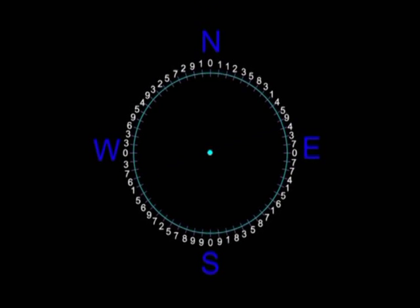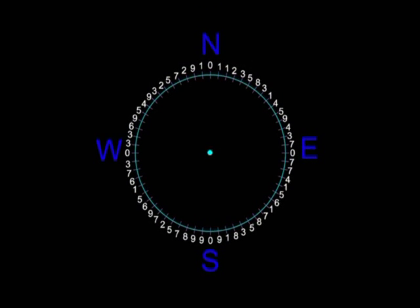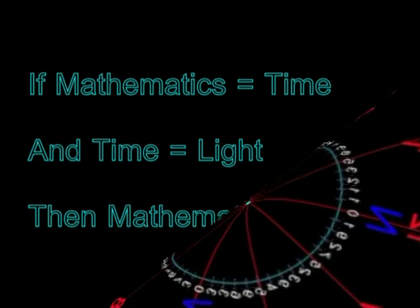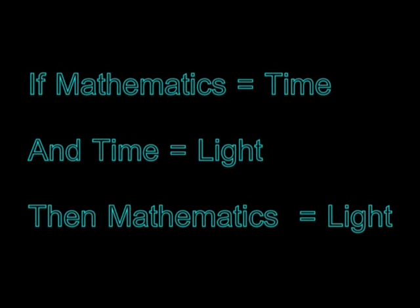I have already stated that I think time and mathematics are the same thing. I have shown you how the Fibonacci sequence and mathematics create a perfect clock. Now I will make another astounding observation. If time is unfolding at the speed of light and time and mathematics are the same thing, then mathematics and light must also be the same thing.